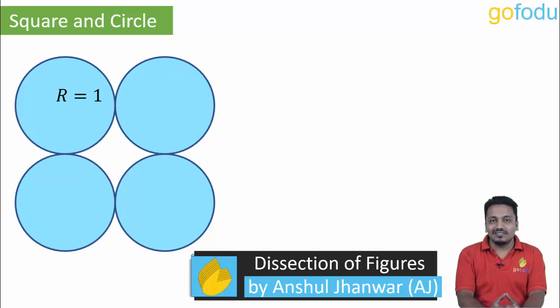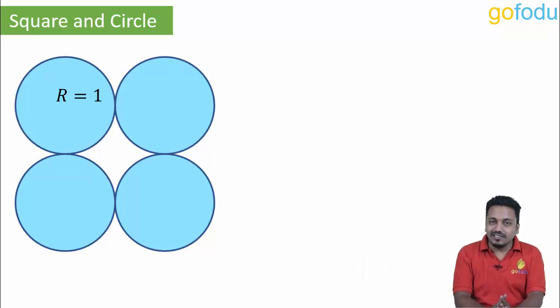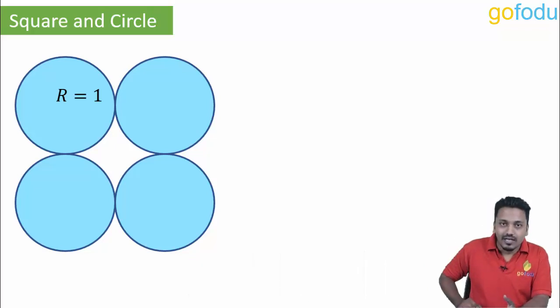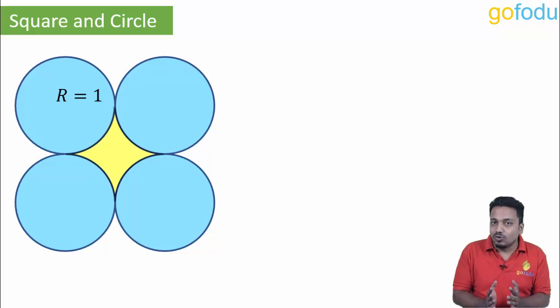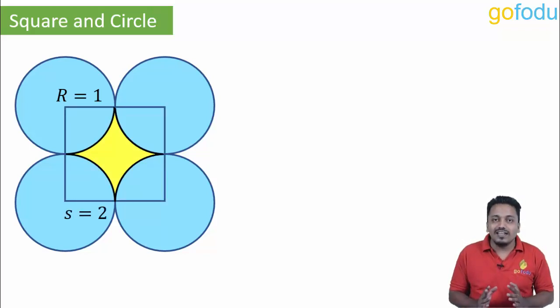Let's continue with the video on dissection. Four circles are touching each other as shown, and we have to find the area enclosed in between. Join the four centers and what we get is a square. Now this fluorescent area is what we have to find.